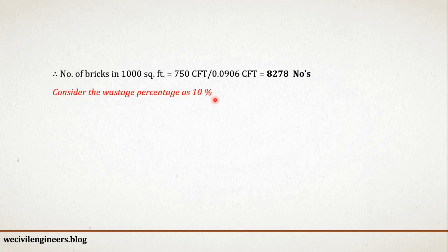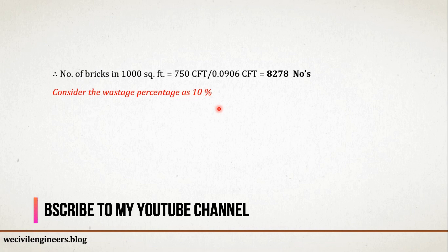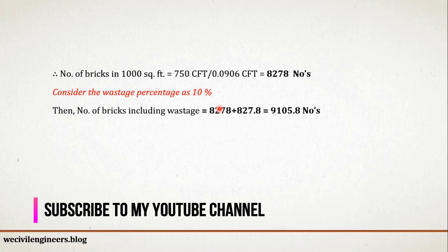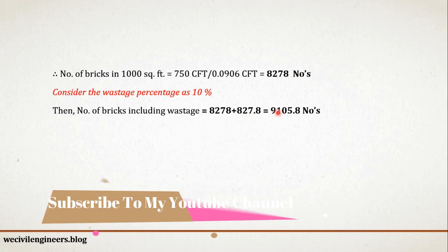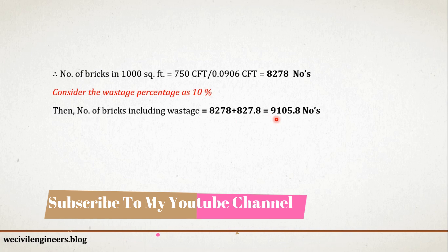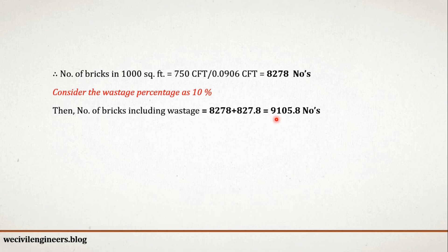Considering the wastage percentage as 10%: on the field, no one works 100% efficiently — there will be some wastage. So I am considering 10% wastage in this case. Then, number of bricks including wastage equals 8278 plus 827.8, which is 10% of this value. If you add these two values, then you will get 9105.8 numbers.